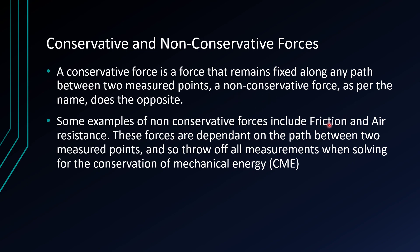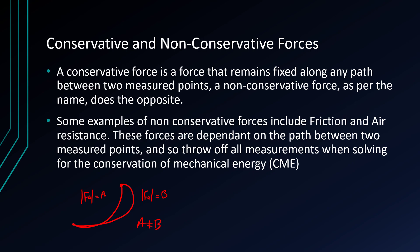For example, friction and air resistance — these forces are dependent on the path between two measured points. So if we select two points and two different paths, say we take this path, and then take a slightly wider turn, the magnitude of the frictional force will be different. So this one will be A, and this frictional force will be B. A is never equal to B if they are two separate paths along one consistent material.